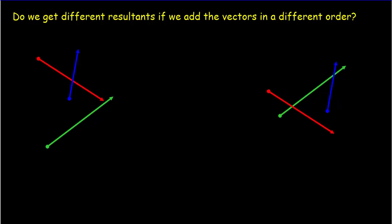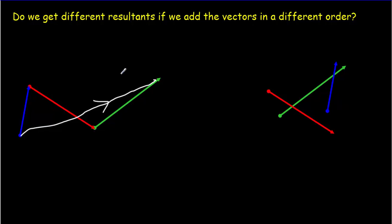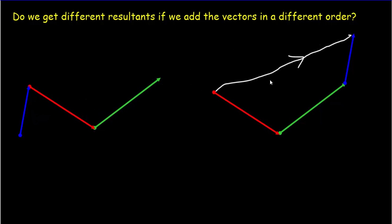Something you might be asking yourself now is, do we get different resultants if we add the vectors in different orders? Well, let's check that out now. We've got three vectors, a red, a green, and a blue one. So I'm going to add them blue, followed by red, followed by green. If I do that, my resultant will go from that first tail to that last head, like so. Now, let's change the order up a bit. Let's say, start with red, go with green, and then blue. Let's see if we got the same resultant. Look at that, same resultant. So it doesn't matter at all what order you add the vectors. You still get the same resultant.